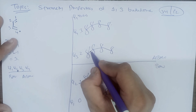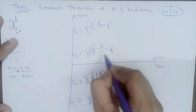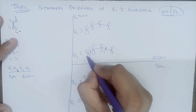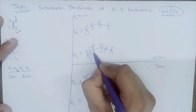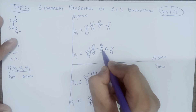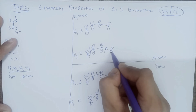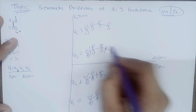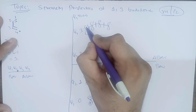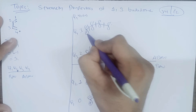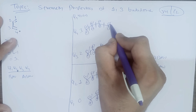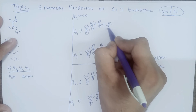For psi 3 with 2 nodes, we place one node between carbons 1-2 and another between carbons 3-4, giving the sign pattern: minus, plus — sign changes — plus, minus — sign remains — plus, minus — sign changes — minus, plus. For psi 4 with 3 nodes, the pattern is: minus, plus — change — plus, minus — change — minus, plus — change — plus, minus.